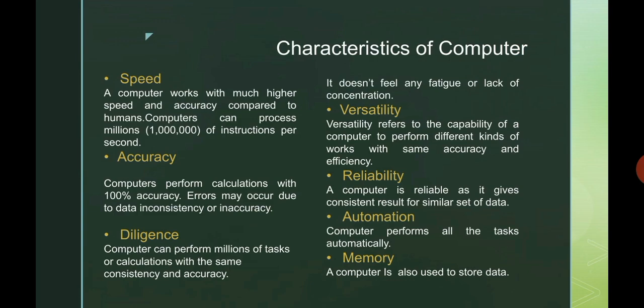Next is accuracy. For example, if you and I are doing any calculation, errors may occur, but computers give us 100% accuracy. Next is diligence. Diligence means computers can perform millions of tasks without any rest or tiredness.